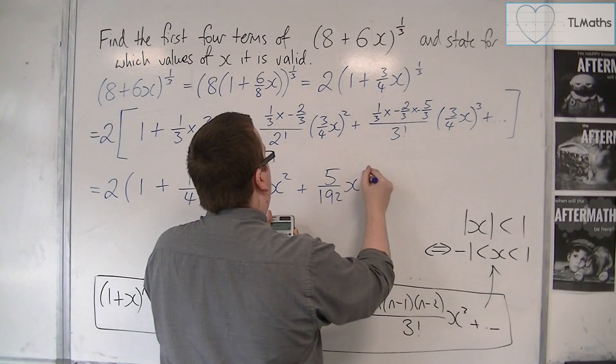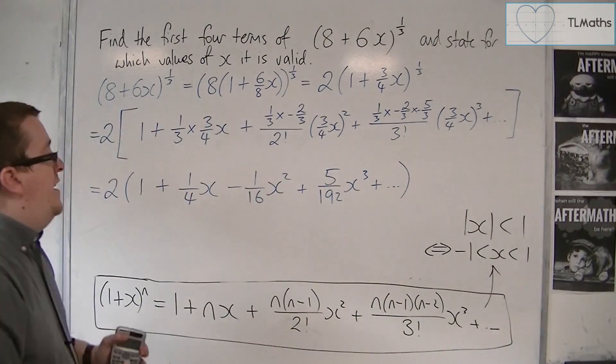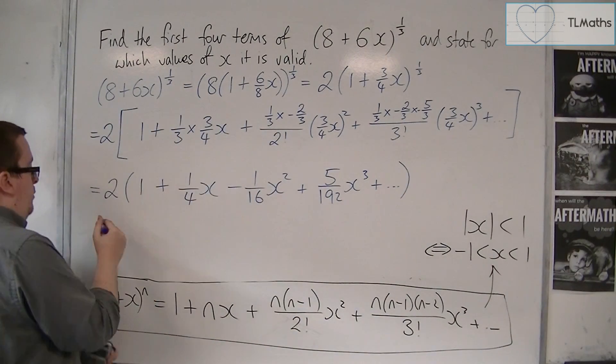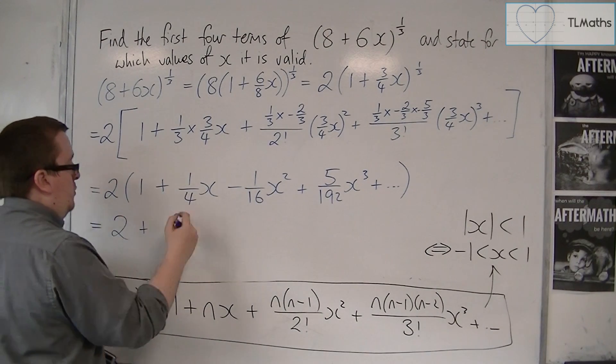And we get 5/192 x^3, plus other terms. And then we finally need to multiply all of these by 2.